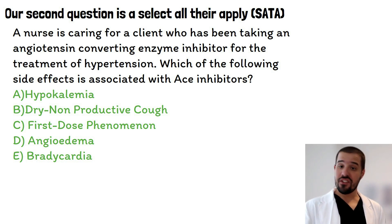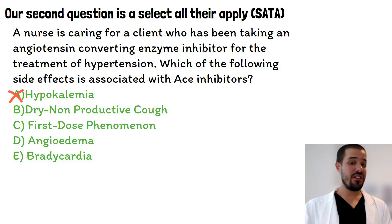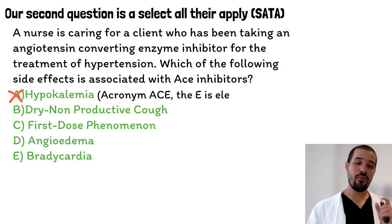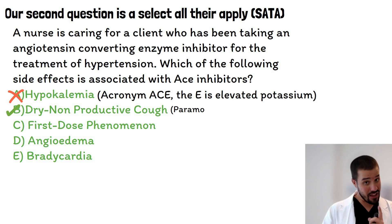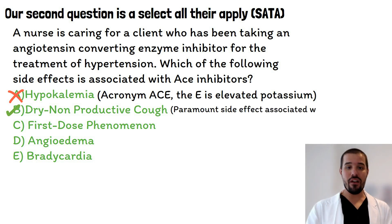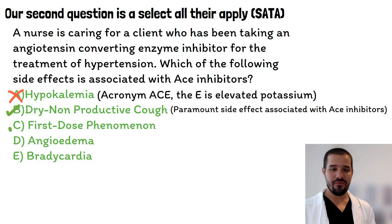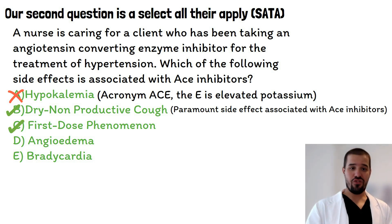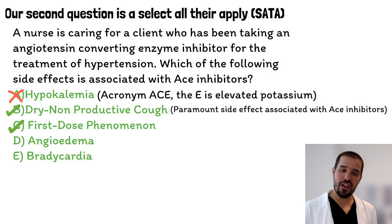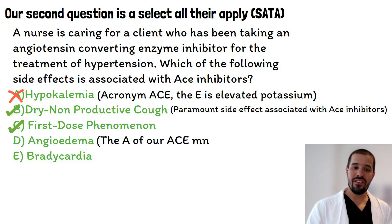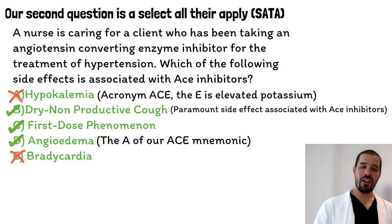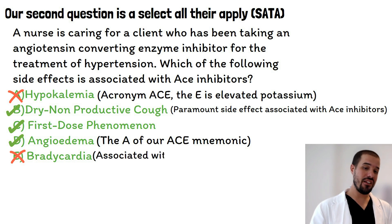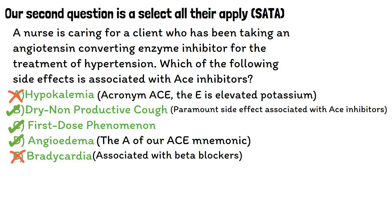Breaking down each option: A) hypokalemia is not correct — remember with the ACE mnemonic, E is elevated potassium, not low. B) dry non-productive cough is correct — this is the paramount side effect. C) first dose phenomenon is correct and pertains to this medication classification. D) angioedema is correct — that is the A in our ACE mnemonic. E) bradycardia is not correct — it is normally associated with beta blockers. The correct answers are B, C, and D.